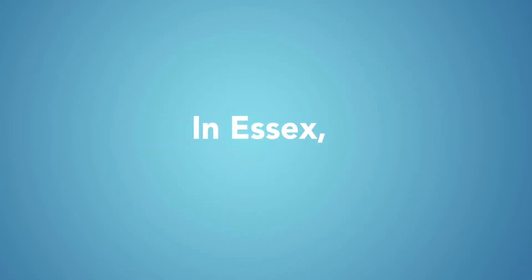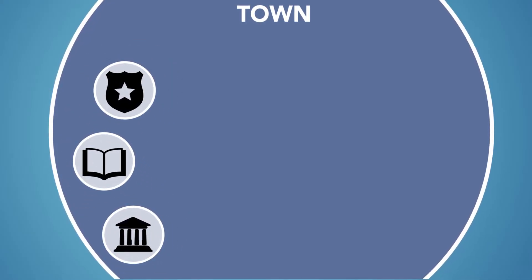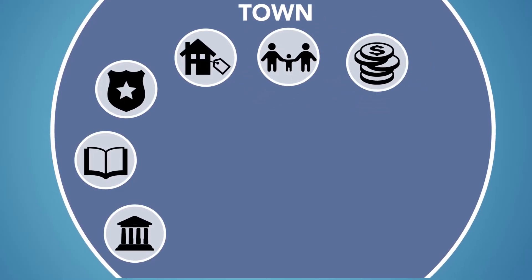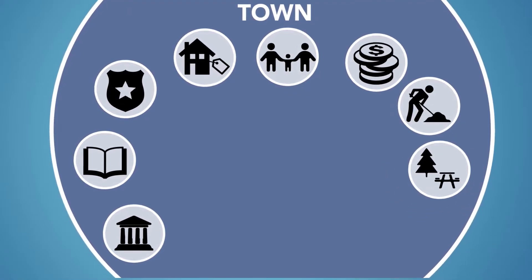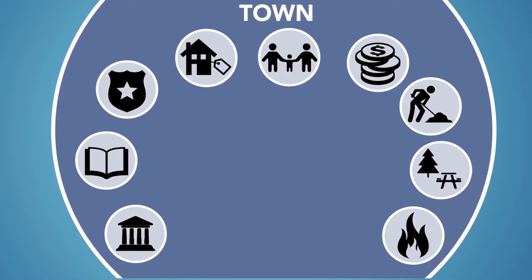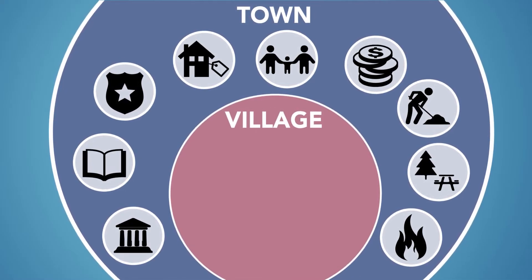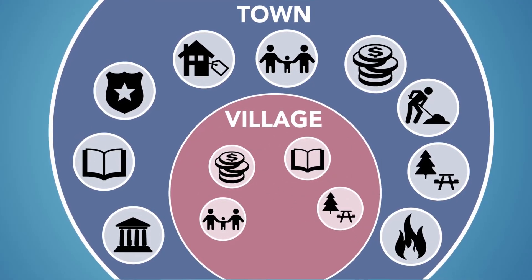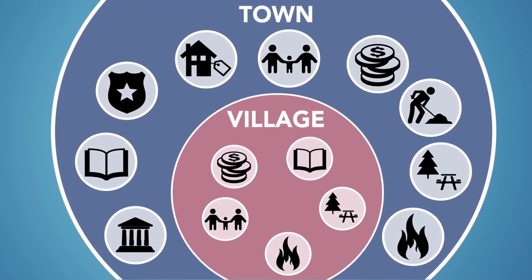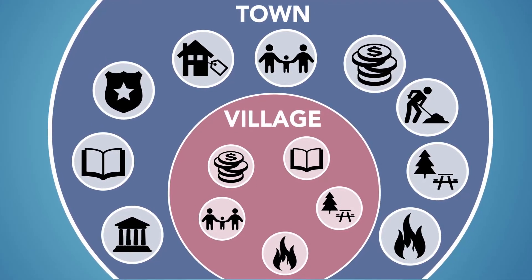In Essex, each property owner pays taxes based on the assessed value of their property to support municipal services. These services are paid for by all property owners of the town of Essex, including the village. Additionally, village property owners pay for and benefit from community development, finance and administration, the Brownell Library, Essex Junction Recreation and Parks, and the Essex Junction Fire Department. It is worth noting that the rec department in the village is funded by the taxpayers but managed by the Essex Junction School District, as opposed to being managed by the village municipality.